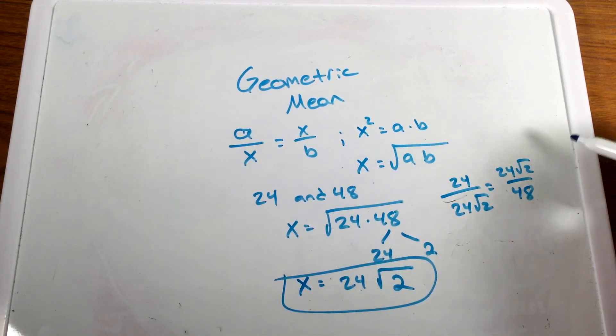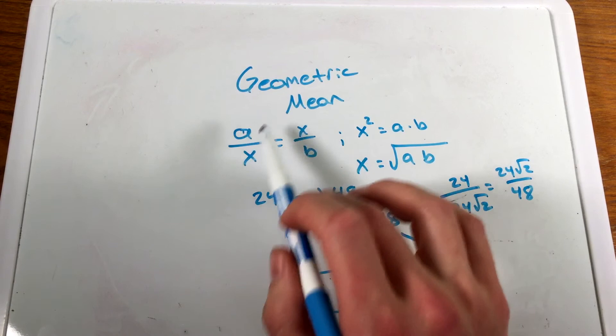So the geometric mean is something that satisfies between these a and b values, this equation right up here.